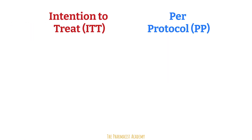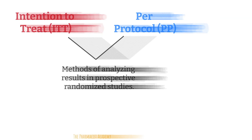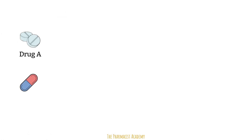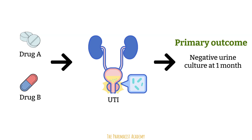Intention to treat and per-protocol are both methods of analyzing results in prospective randomized studies. Let's assume we are conducting a study with drug A and drug B in patients with a UTI, with the primary outcome being a negative urine culture at one month.